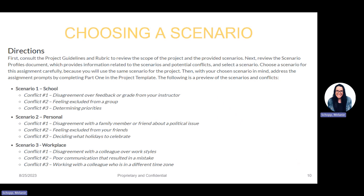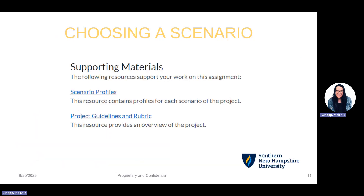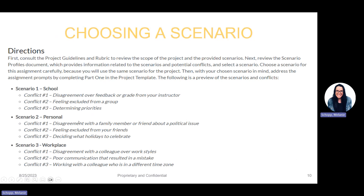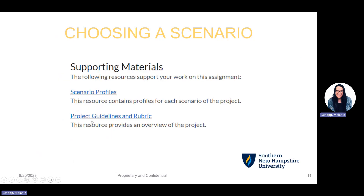This ties directly into your project draft. For your project draft, you are going to be working from the very same document throughout the term. Under Module 2, you will find directions on choosing a scenario. What you see in Module 2 is a brief synopsis of the three different scenarios and the conflicts you can pick from — you want to pick one scenario. To view all the details, visit the scenario profiles found underneath the supporting materials. Scenario 1 is a school scenario, Scenario 2 is a personal scenario, and Scenario 3 is a workplace scenario. You can find all of them in more detail underneath the scenario profiles, and I'll show you that in just a little bit.